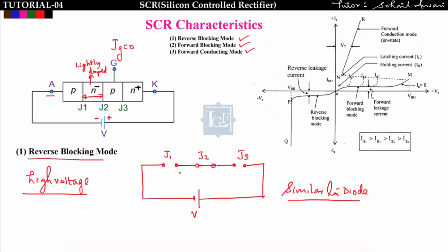The reverse blocking mode characteristics are similar to a diode. The difference is that in SCR, voltage drops across both J1 and J3, whereas in a diode only one junction is present. When the supply voltage exceeds the breakdown voltage, infinite current flows and J1 and J3 break down. We must keep the supply voltage below the breakover voltage.